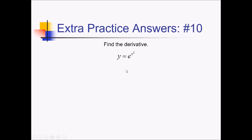For this problem, I just need to use a small chain rule to find the derivative. So we have the outer function, e to the something. The derivative of that is e to the something — e to the x squared in this case — times the derivative of the something. The derivative of x squared is 2x.